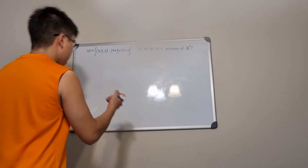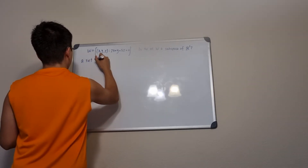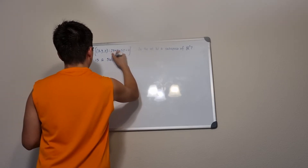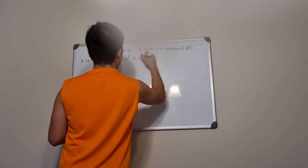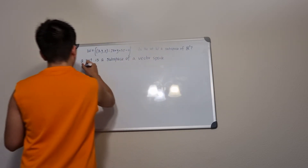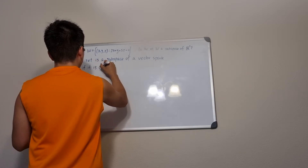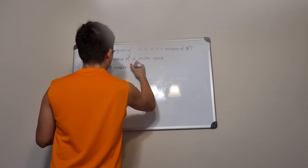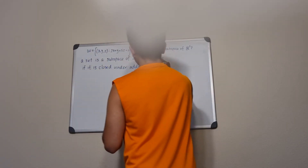Before we start, let's write down the definition of a subspace. A set is a subspace of a vector space if it is closed under addition and scalar multiplication.